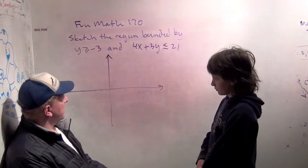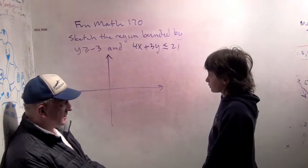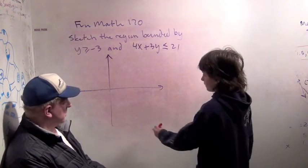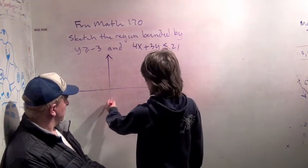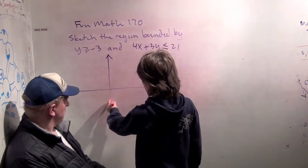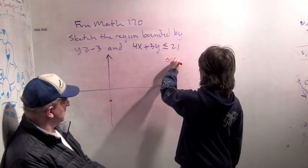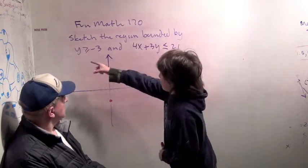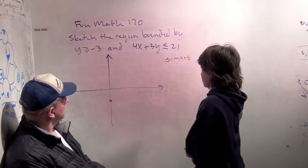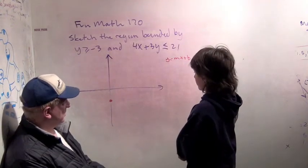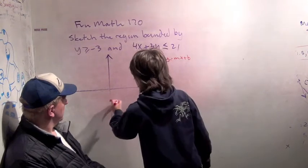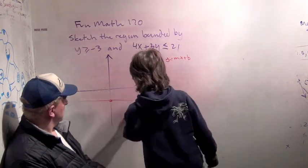First step, y is greater than -3. What does that look like? Well, y equals -3 is about here. We put it in the form y equals mx plus b, and for this the slope is zero, and the y-intercept is -3. So we've got a line that looks kind of like that.